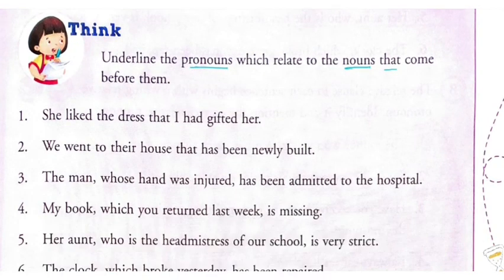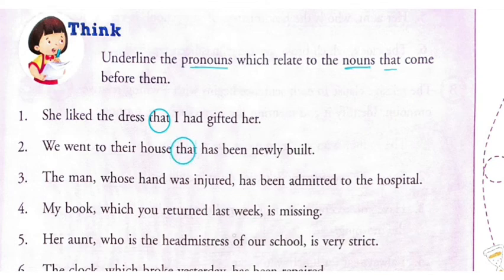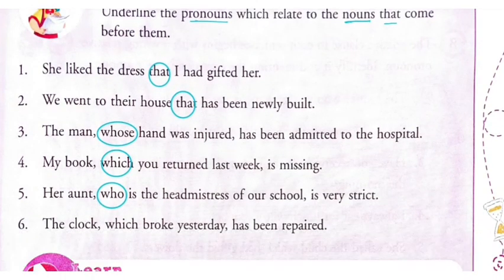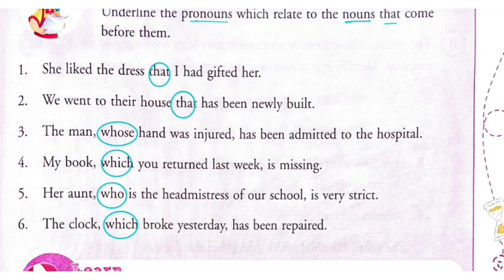I'm encircling the nouns in these sentences. 'She liked the dress that I had gifted her' — you can see the term 'that'. 'We went to their house that has been newly built' — encircling 'that' again. 'The man whose hand was injured had been admitted to the hospital' — encircling 'whose'. 'My book which we returned last week is missing' — encircling 'which'. 'Her aunt who is the headmistress of our school is very strict.' 'The clock which broke yesterday has been repaired.' All these encircled terms are the pronouns.